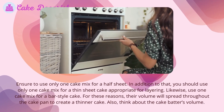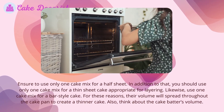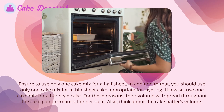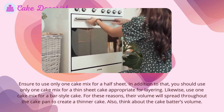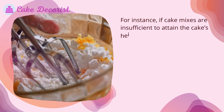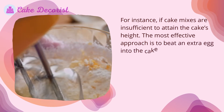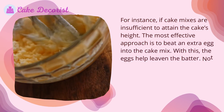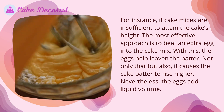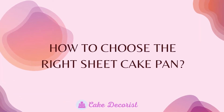For a half sheet, use only one cake mix. You should also use only one cake mix for a thin sheet cake appropriate for layering, and likewise one cake mix for a bar style cake. Their volume will spread throughout the cake pan to create a thinner cake. If cake mixes are insufficient to attain the cake's height, beat an extra egg into the cake mix. The eggs help leaven the batter and cause the cake batter to rise higher, though they do add liquid volume.